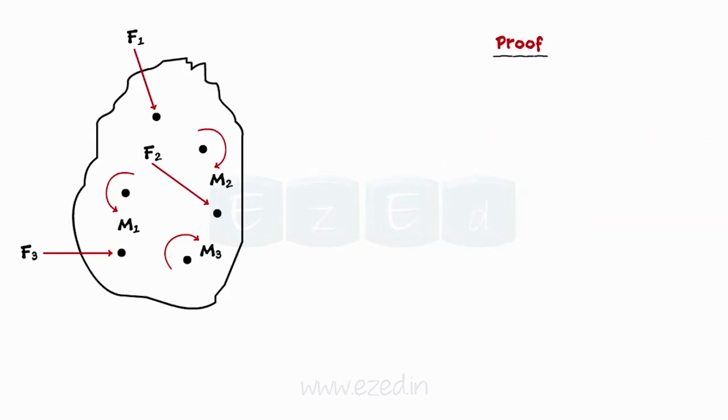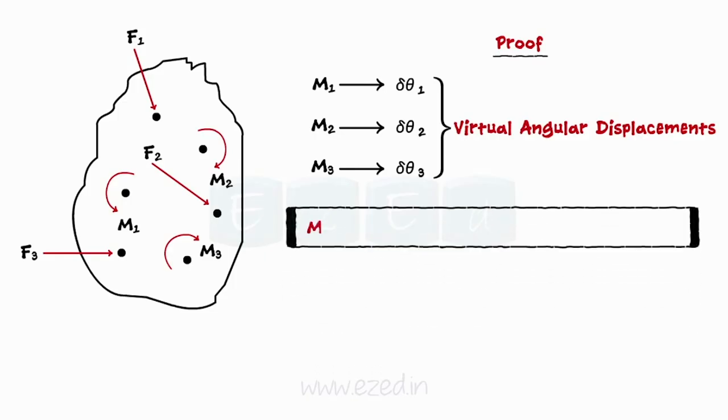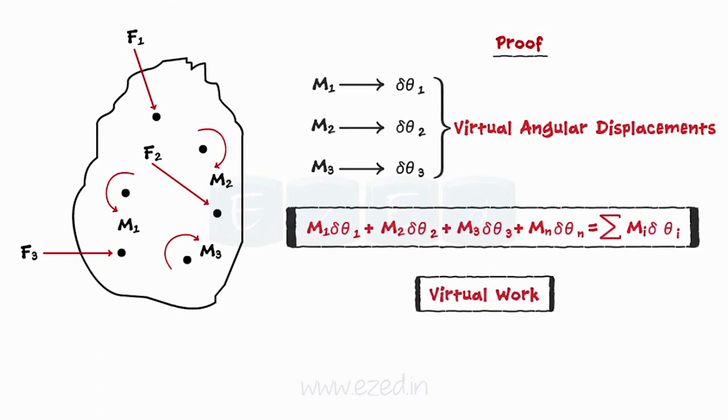Again, the angular forces, that is, couple moments M1, M2, M3 will have angular displacements as δθ1, δθ2, δθ3 respectively. These displacements are known as virtual angular displacements. The work done due to these forces is given by the summation of the product of the magnitude of a couple moment and its virtual angular displacement.